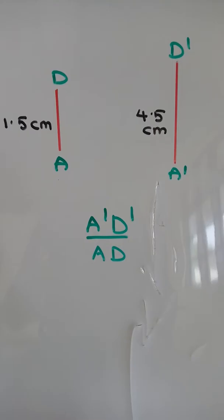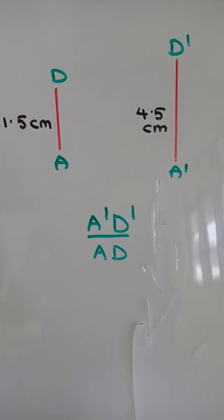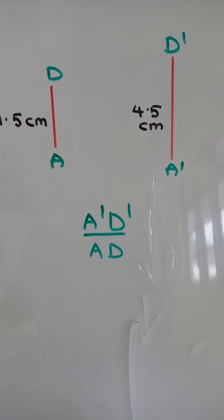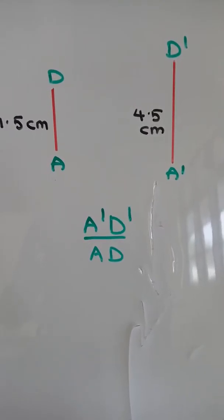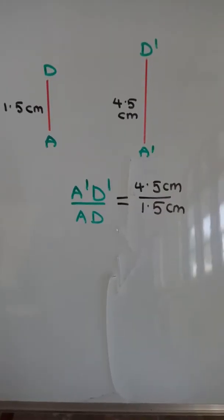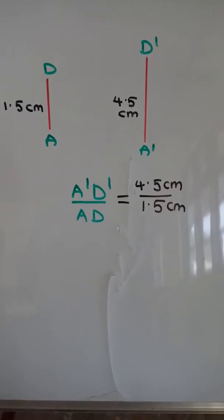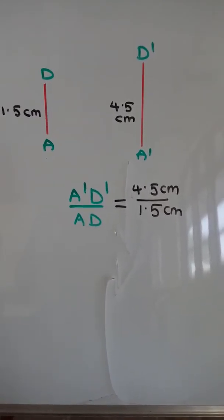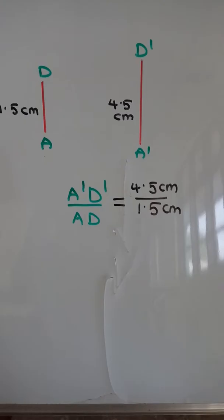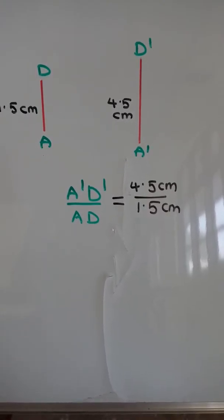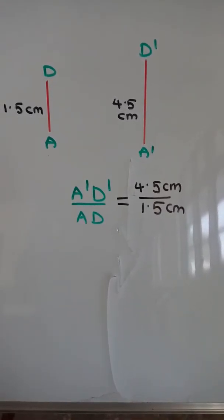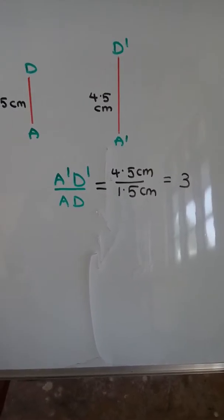So when we take A'D' over AD, which is equal to 4.5 cm divided by 1.5 cm, which is equal to 3.